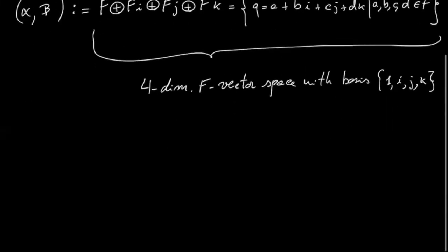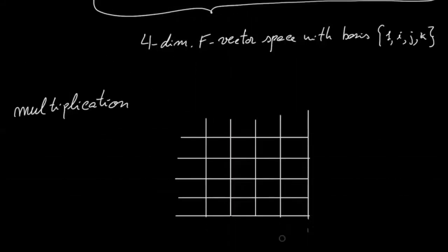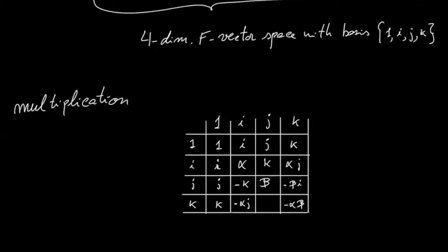On this vector space one introduces a multiplication as follows. We have the multiplication table for one, i, j, k: multiplication by one is as expected. i squared is equal to alpha, j squared is equal to beta, and k squared is equal to minus alpha beta. Here you already see the non-commutativity of multiplication: ik is equal to alpha j, in contrast ki is equal to minus alpha j; jk is equal to minus beta i, in contrast kj is equal to beta i.